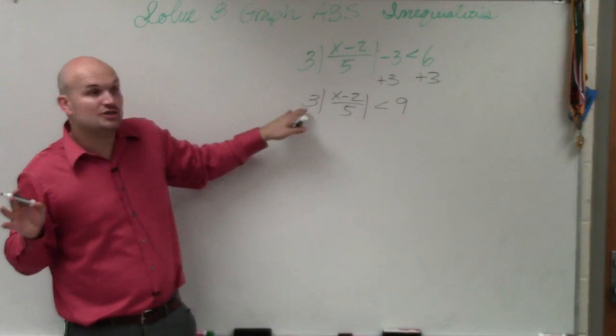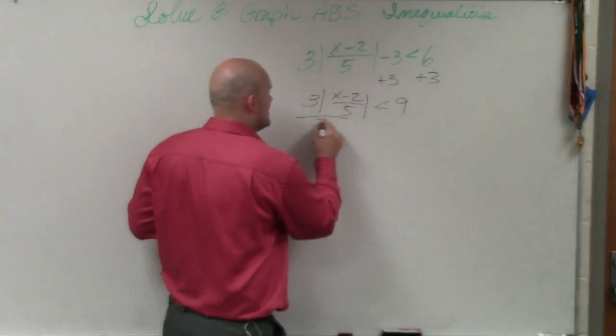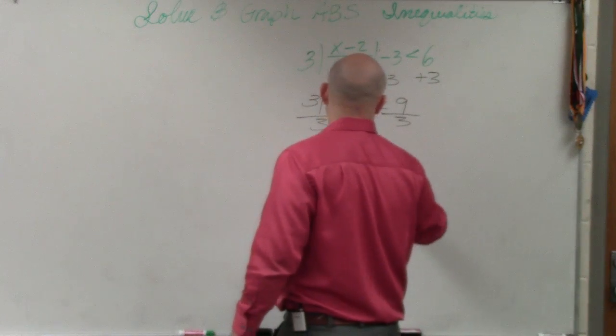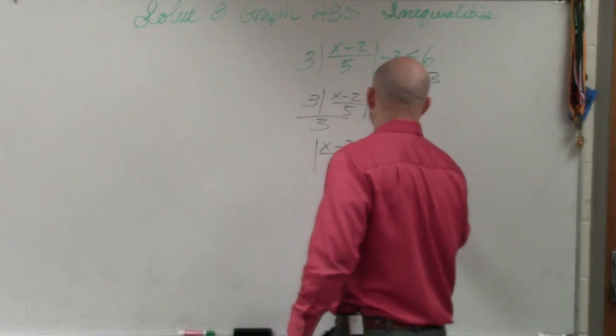Then we've got to undo multiplying by 3. So I divide by 3. So I have x minus 2 over 5, absolute value is less than 3.